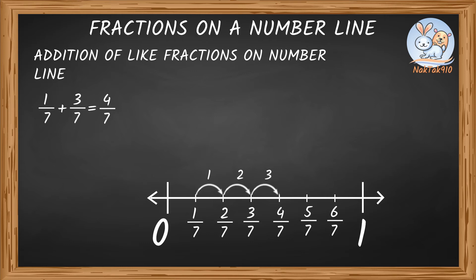Because we already know how to add like fractions, let's check if this is right with our usual model. 1 seventh plus 3 sevenths. Both are like fractions, so add the numerators. 1 seventh plus 3 sevenths is the same thing as 1 plus 3 over 7 equals 4 sevenths. Same answer as our number line answer.